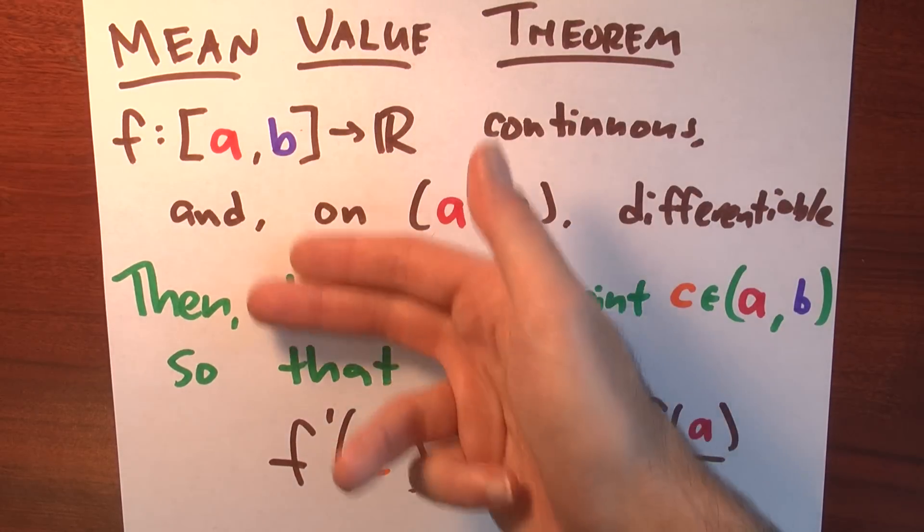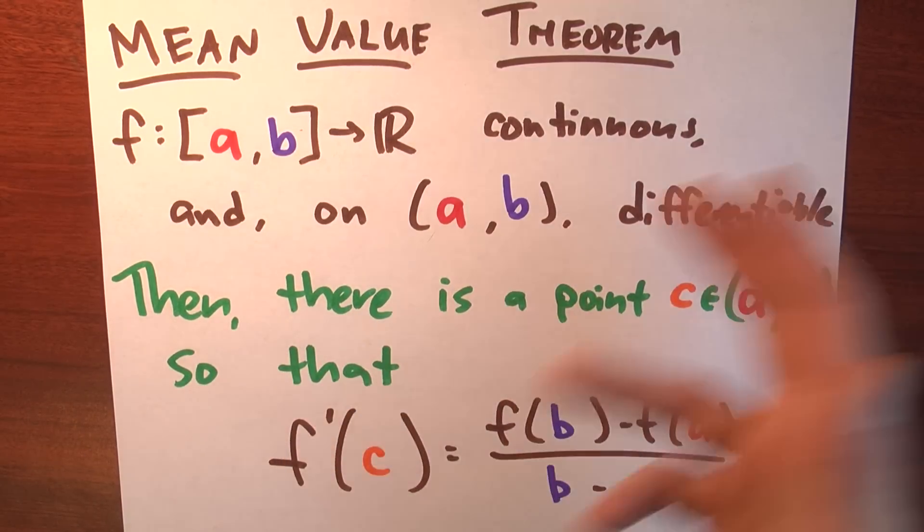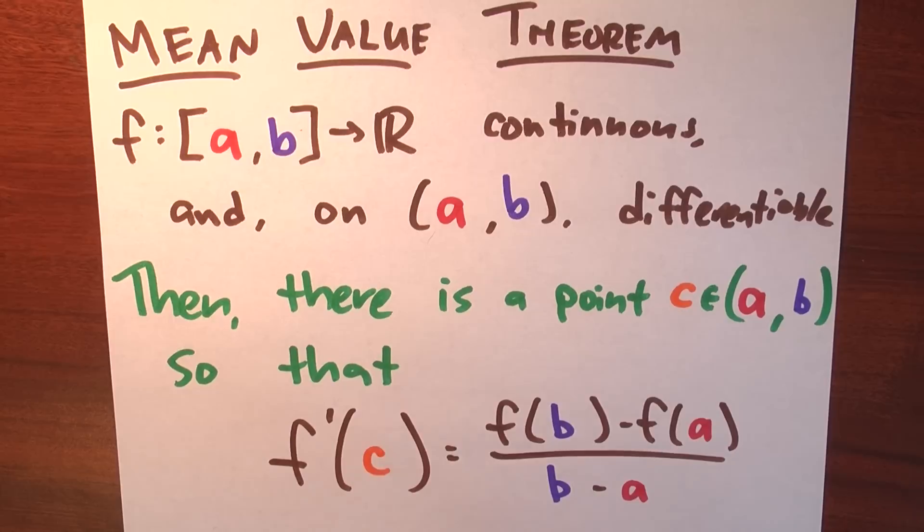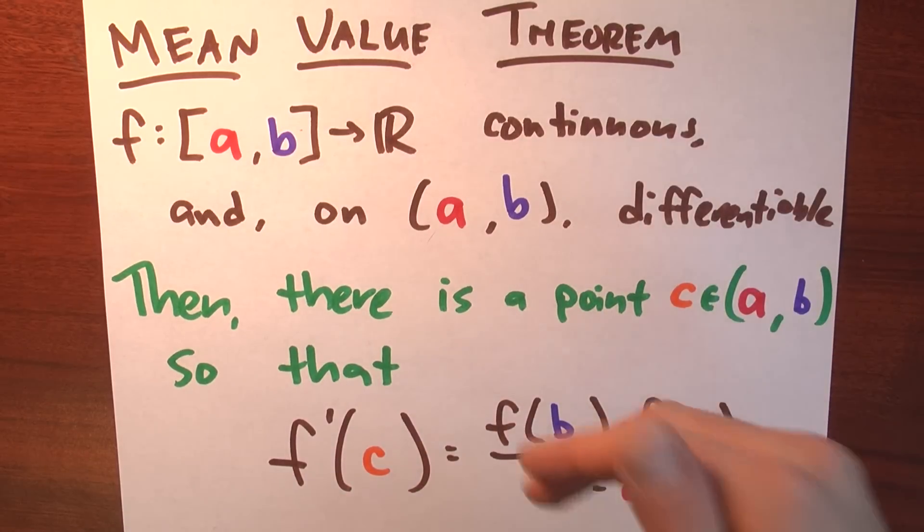Now, with these assumptions, here's what happens. Then, there's some point c between a and b, doesn't tell me how to find that point, but there is one, so that this happens. The derivative of the function at the point c is equal to f of b minus f of a divided by b minus a.